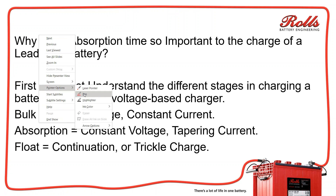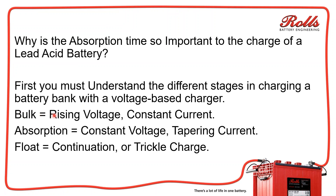The first stage of charging is the bulk stage. The bulk stage is rising voltage, constant current. So when you start the bulk stage of a charger — for example, let's say it's a 48 volt system — the generator starts, or you plug into shore power or the utility, and it starts charging. Voltage is going to rise all the way up to whatever you program as the bulk absorption set point. For our batteries, bulk and absorption are the same set point.